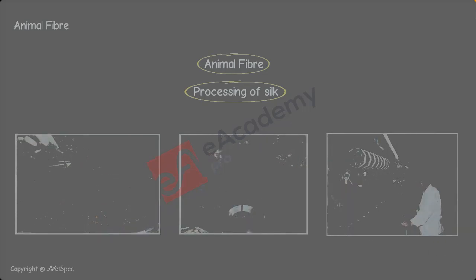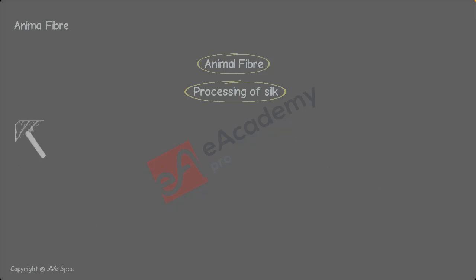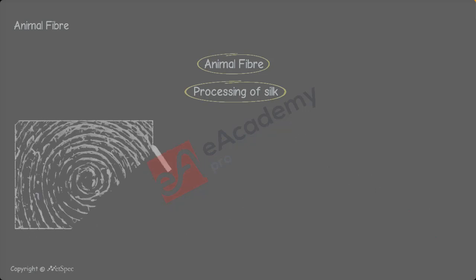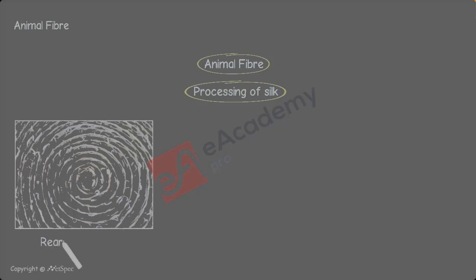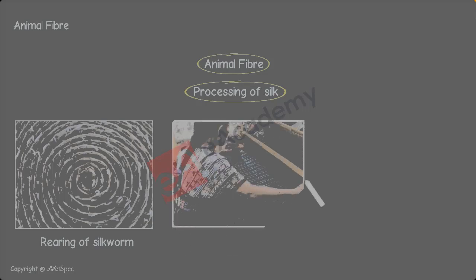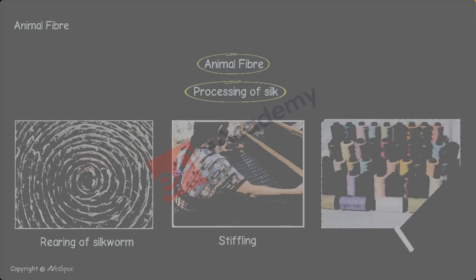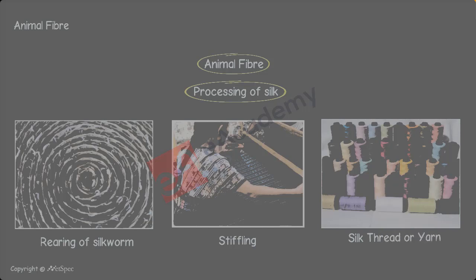These cocoons, after boiling, are sent into reeling units for separation of silk fiber. In the reeling units, 3 to 8 silk fibers are woven into silk threads, also known as yarn. The yarn produced in the reeling unit is cleaned, bleached, and dyed — after dyeing, permanent coloration is done on the fiber — and then sent into weaving units.